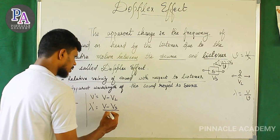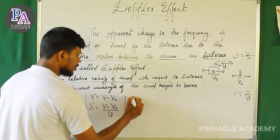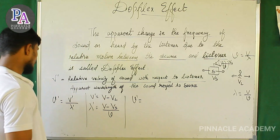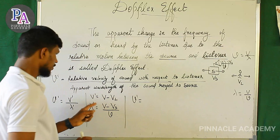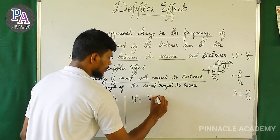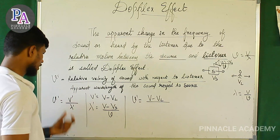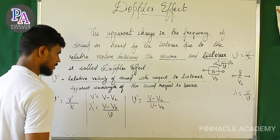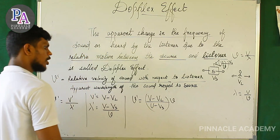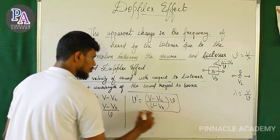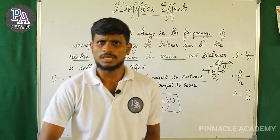So new-dash equals V minus VL divided by lambda-dash, which equals V minus VL divided by (V minus Vs divided by nu). This simplifies to new-dash equals new times (V minus VL) divided by (V minus Vs). This is the apparent frequency equation.